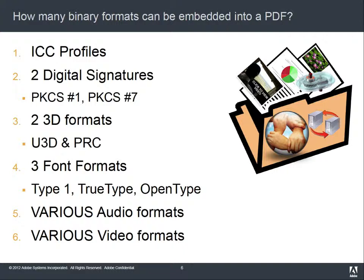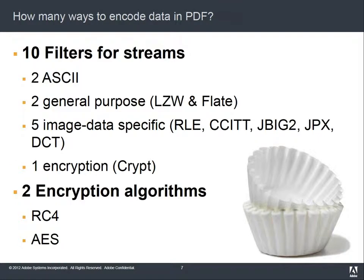Not to mention the possibility of all of the different audio and video formats that can be embedded in a PDF — each one separate, distinct, unique, that have to be looked at and validated accordingly. Not only do we have all these different types of data, but we can also encode or filter the data in ten different ways. We have ASCII filters, FLATE and LZW filters, image-specific filters, encryption, and different encryption algorithms that all need to be processed and validated on top of whatever the data is that they are compressing, encoding, or encrypting.